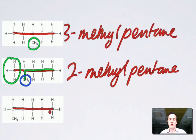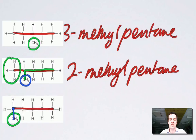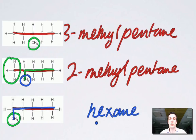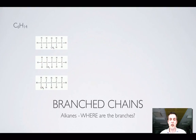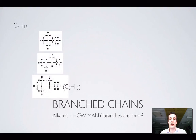This molecule might look like it has a longest chain of five with a one-carbon branch off the first carbon, but calling it 1-methylpentane would be a mistake. What's been overlooked is that this molecule actually has a longest continuous chain of six carbons. Once you spot that, there are no branches at all — it's simply hexane.